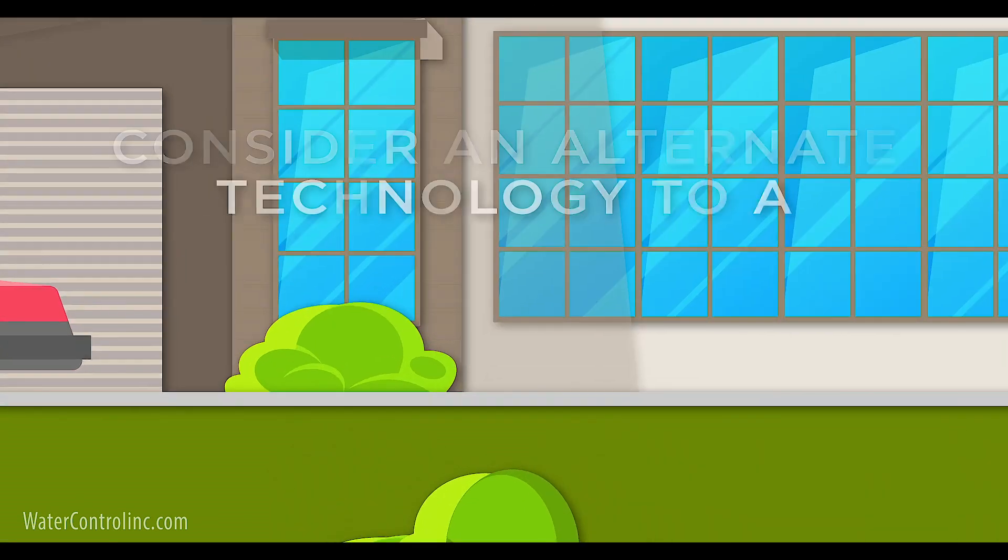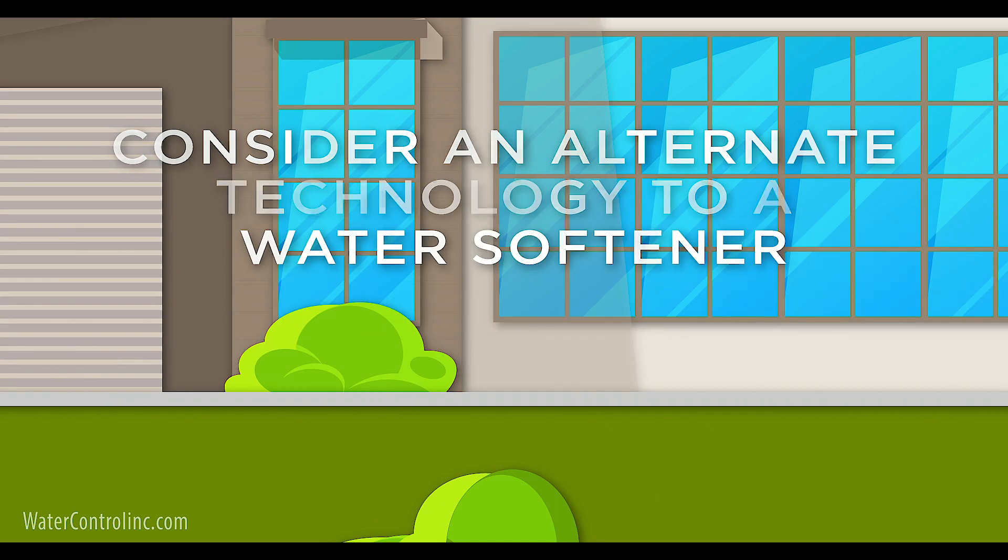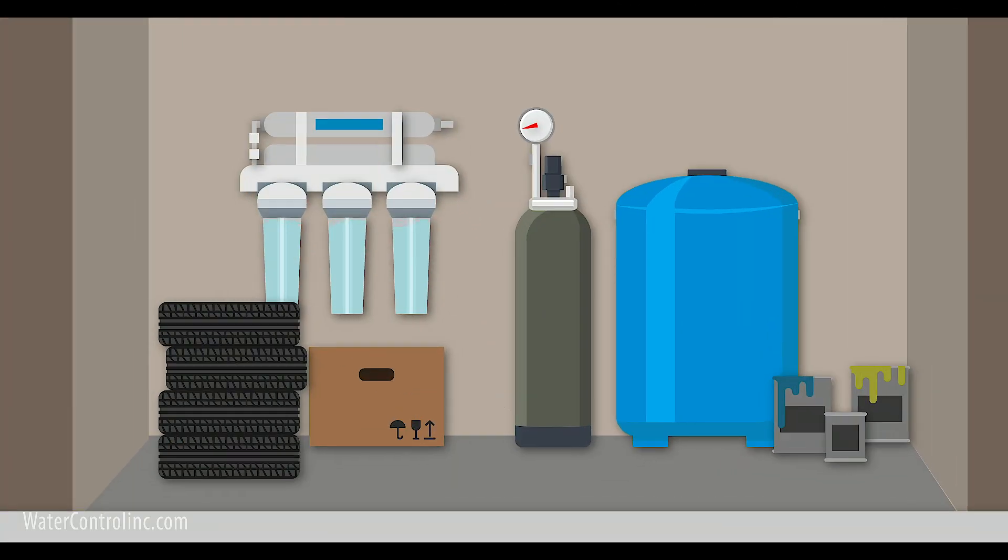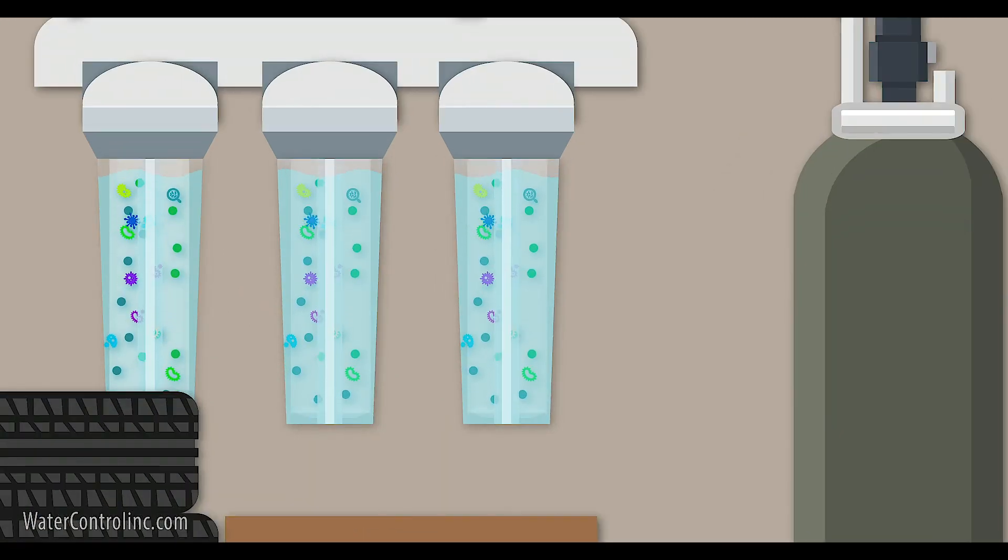And number three, consider an alternate technology to a water softener. One option is a whole house reverse osmosis system. Instead of media, we use a membrane system to take out the hardness minerals as well as all sorts of other nasty contaminants.